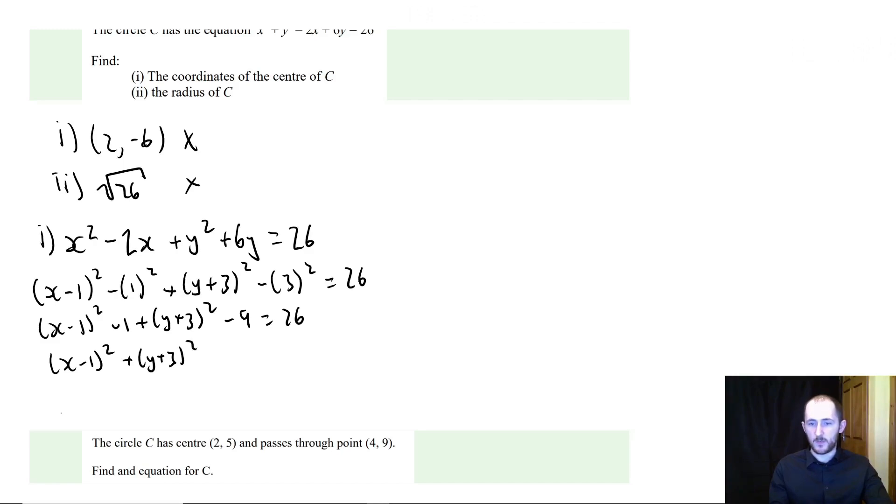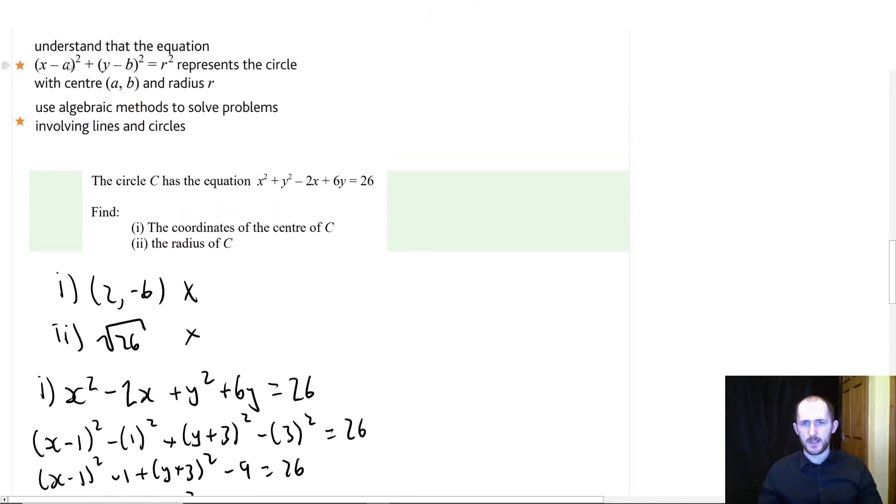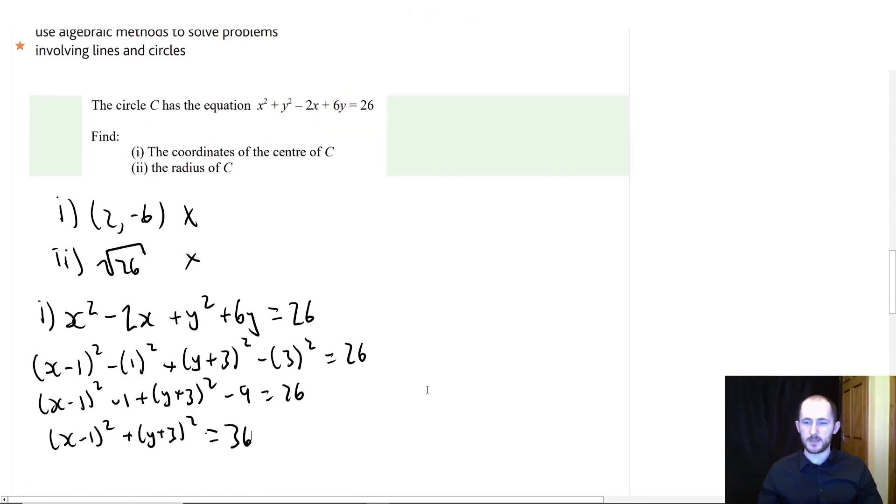And now I'm going to add it all on to the other side. So now we have x minus 1 squared plus y plus 3 squared. Then add 9, we'll make that 35. Add another 1, make that 36. Now if I compare that to this, I have x minus a number plus y minus a number equals r squared, which means I'm correct.